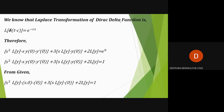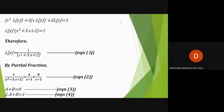Since e raised to 0 equals 1, substituting y(0) equals 0 and y'(0) equals 0 into the equation, we get s²·L{y} plus 3s·L{y} plus 2·L{y} equals 1. Factoring out L{y}, we get L{y} times (s² plus 3s plus 2) equals 1. Therefore, L{y} equals 1 over (s² plus 3s plus 2), which we call equation 1. By partial fractions: 1 over (s² plus 3s plus 2) equals A over (s plus 1) plus B over (s plus 2), which we call equation 2.